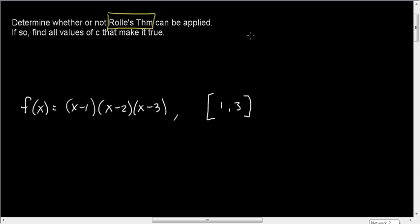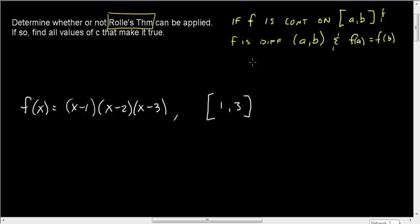If F is continuous on some closed interval [a,b], and F is differentiable on the same open interval (a,b), and F(a) is equal to F(b), in other words the y-values are the same, then there exists some value C in (a,b), in the open interval, where the derivative is zero.